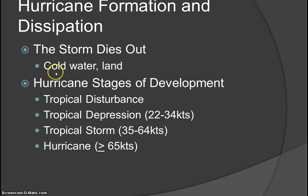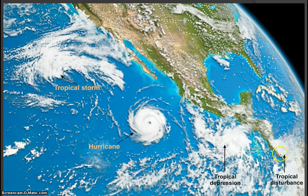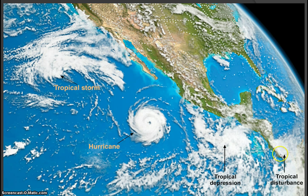Hurricanes die out due to cold water and land — these two things kill a storm. Vertical wind shear also kills storms: strong winds in the upper atmosphere will kill the thunderstorms that power the hurricane. The stages of development are: tropical disturbance, tropical depression, tropical storm (35 to 64 knots), and hurricane (greater than or equal to 65 knots). A satellite picture can show three or four stages all at once as systems move to the northwest.